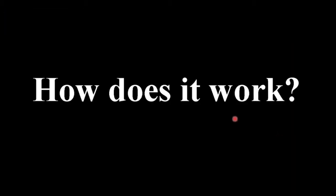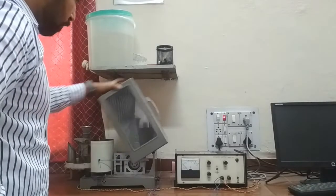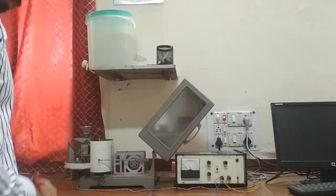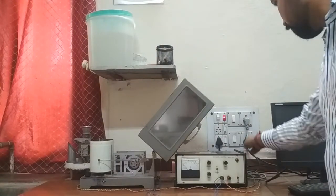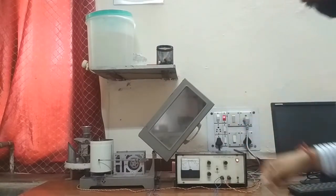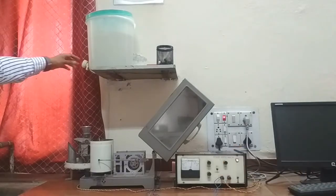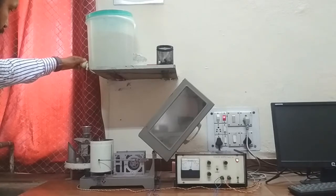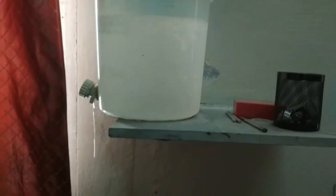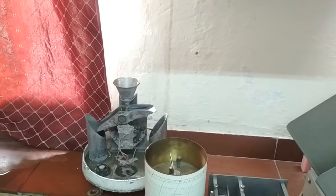Now let us understand how it works. We will open the setup box and switch on the power supply. Here we have a bucket filled with water which will act as rain. You can see water is falling into the funnel located at the top of the rain gauge. The funnel directs the water into one of the two tipping buckets, which work like a see-saw container.